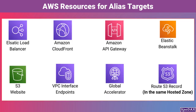In Route 53, ALIAS records can target various AWS resources, providing seamless DNS integration and dynamic routing. Supported AWS resource types for ALIAS targets include: Elastic Load Balancers, commonly used for distributing traffic across multiple servers; CloudFront Distributions, ideal for delivering content with low latency; API Gateway, enabling efficient routing to serverless APIs; Elastic Beanstalk, for deploying and managing applications easily; and S3 Static Websites, which allow hosting of simple websites with low costs.